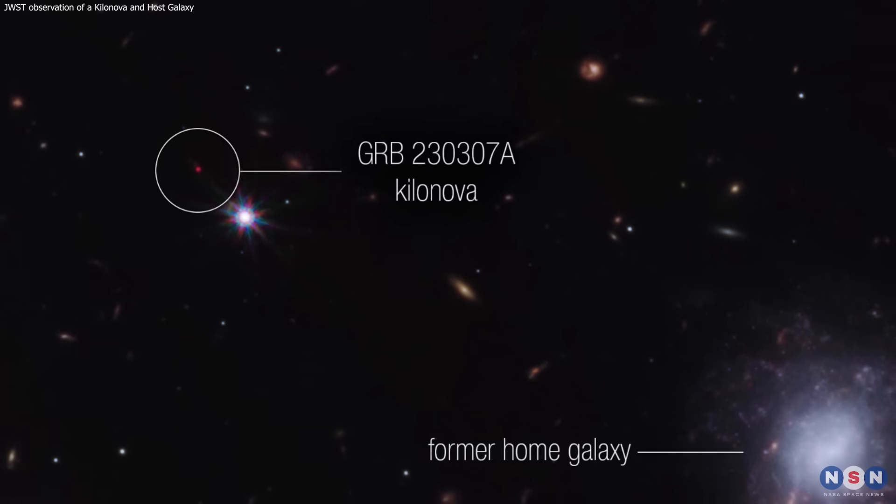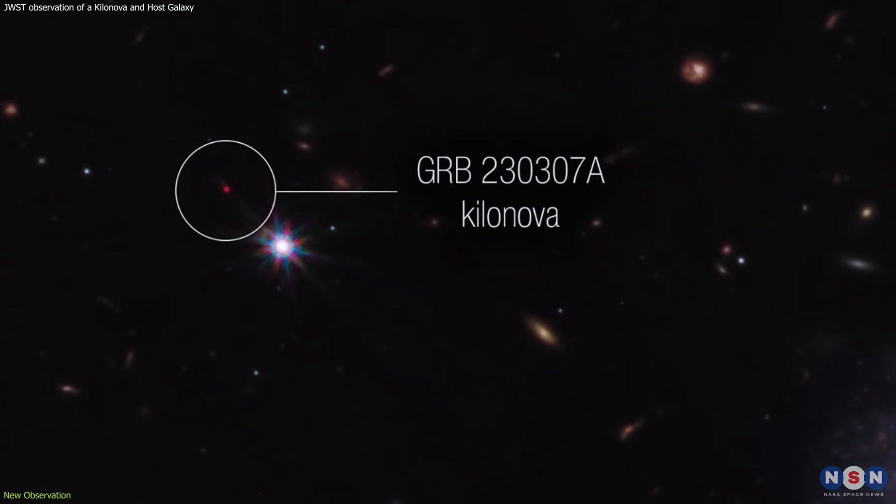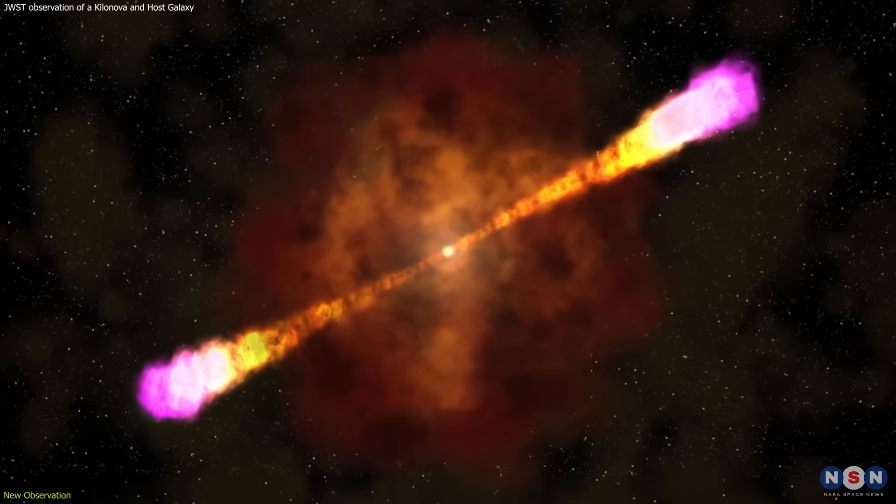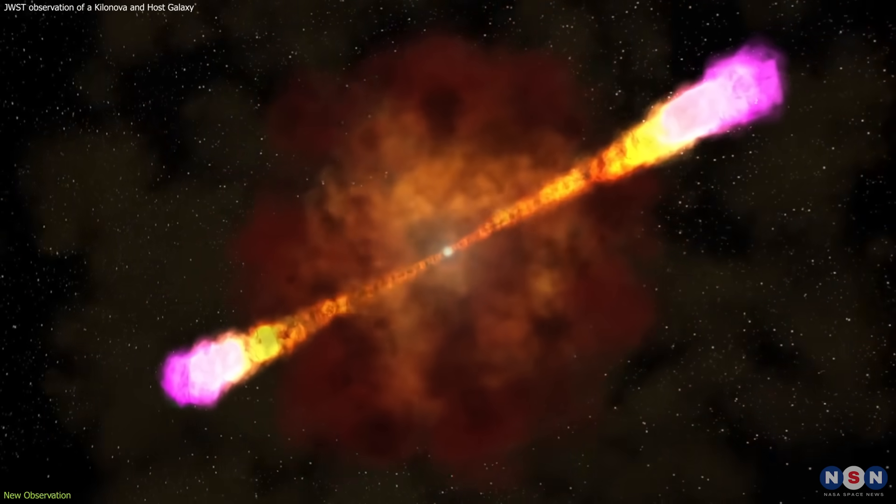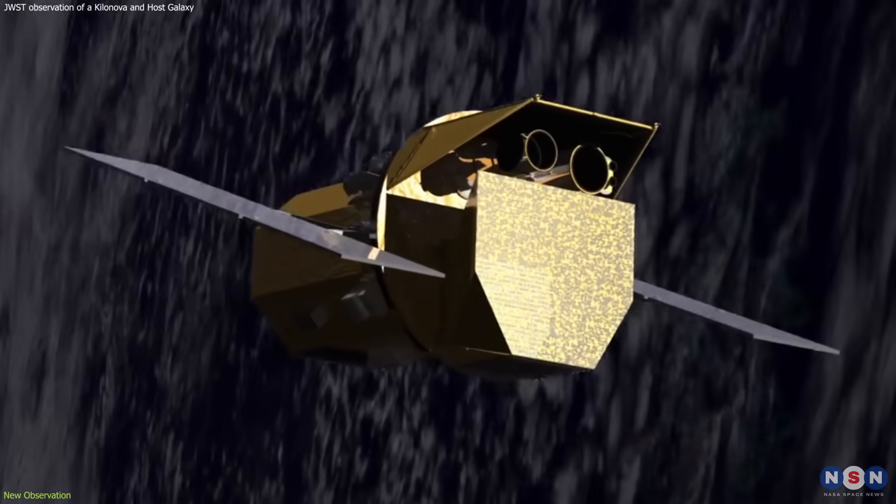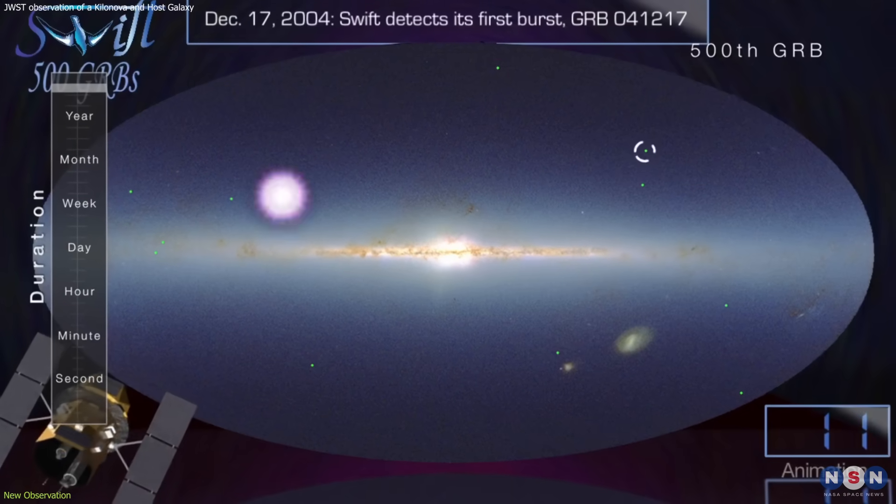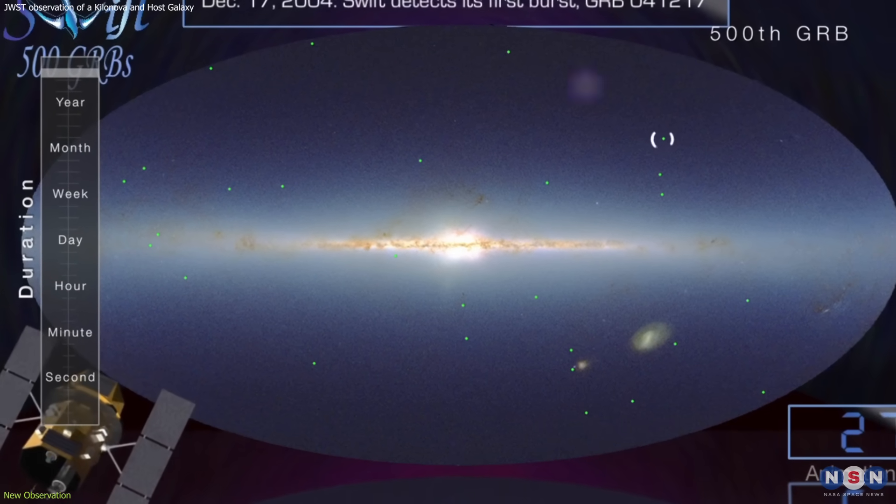The kilonova that we are going to talk about today was named GRB-230307A, which stands for Gamma Ray Burst 230307A. It was first detected by the Swift satellite on March 7, 2023.